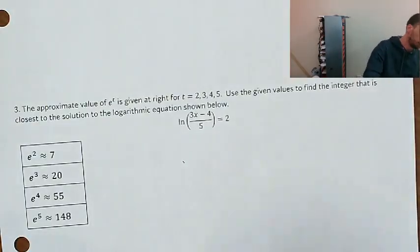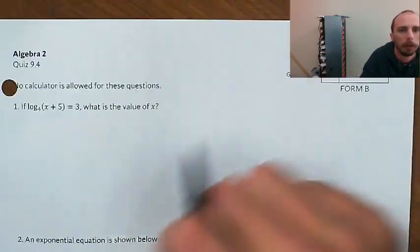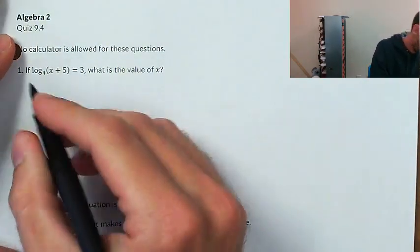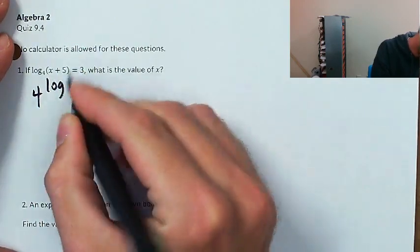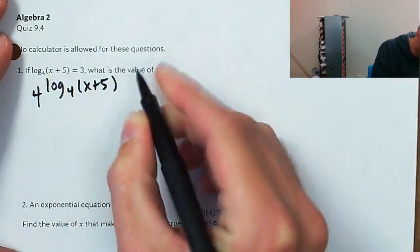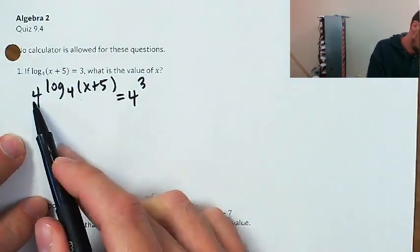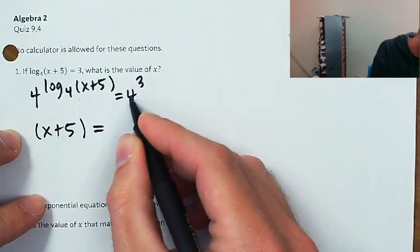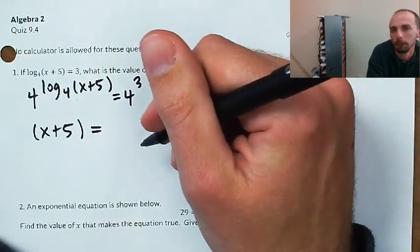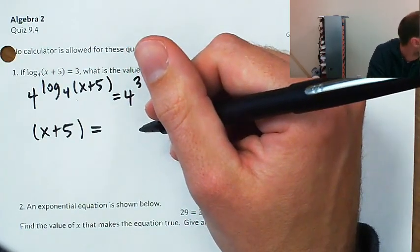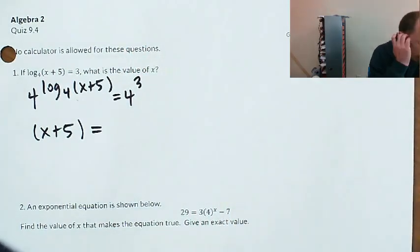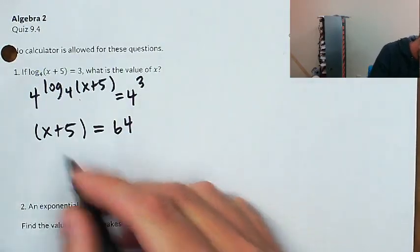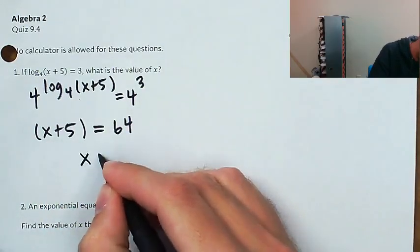Now on to Form B. We've got a log with base 4, so we're going to take 4 to both sides as a power to get rid of that log. 4 to the log base 4 of a thing is just going to be that thing — one of our fundamental identities. So x plus 5 equals 4 to the third. 4 to the third is 64, so subtracting 5 from both sides gives x equals 61.